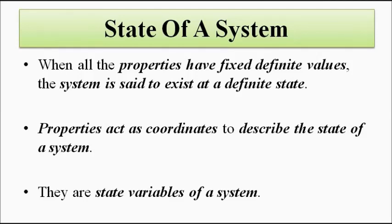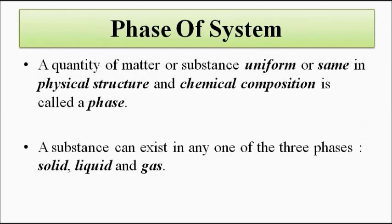Next is the concept of phase. A quantity of matter which is homogeneous — uniform throughout in terms of its physical structure and chemical composition — is said to be existing in a single phase. A substance can exist in any one of three phases: solid, liquid, and gas.